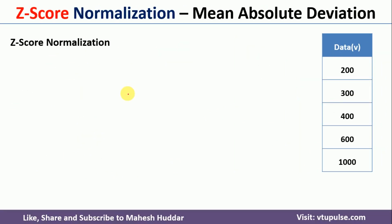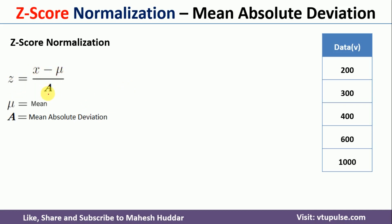Now I will discuss the next normalization technique: z-score normalization with mean absolute deviation. In this case, we use the equation z = (x - μ) / a, where a is the mean absolute deviation. The only change compared to z-score normalization using standard deviation is that here we use mean absolute deviation instead of standard deviation.